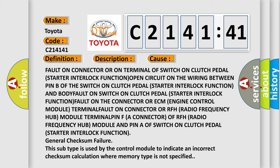Open circuit on connector or ECM engine control module connector or ECM engine control module terminal, fault on connector or RFH radio frequency hub module terminal, pin A connector of RFH radio frequency hub module and pin A of switch on clutch pedal starter interlock function. General checksum failure: This subtype is used by the control module to indicate an incorrect checksum calculation where memory type is not specified.